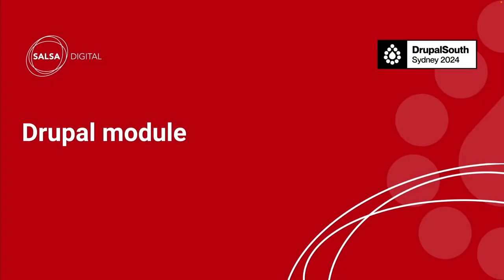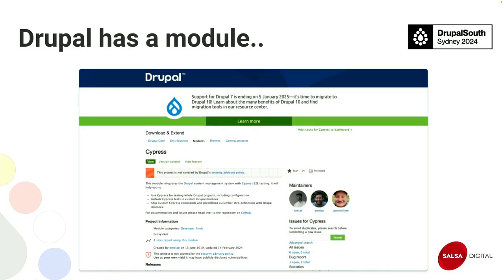We already have a Drupal module for testing — it is available for end-to-end, back-end, and front-end testing. The module is called Cypress. Like other modules, you install it using Composer — just download it and enable it. After that, you can write your own module on top of it in a custom folder, where you can mention different folders. There is a folder structure in Cypress for how you write the tests. You'll need to add the Cypress module as a dependency and make sure it is enabled.